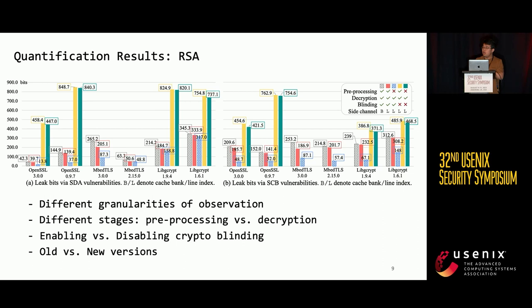We use our tool to quantify the leakage for many different software, including crypto software like OpenSSL and image processing libraries such as libjpeg. In this presentation, I will mainly show results for different RSA implementations. We consider different granularities of side-channel observations and different execution stages of this software, such as the preprocessing stage or decryption stage. We also compare the leakage of enabling versus disabling crypto blinding, and compare leakage among different versions of this software.